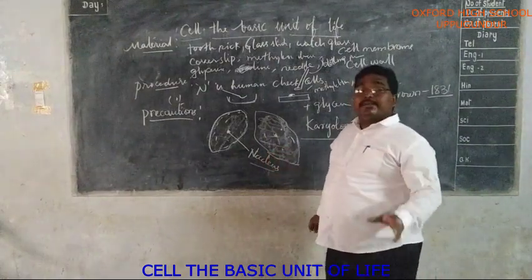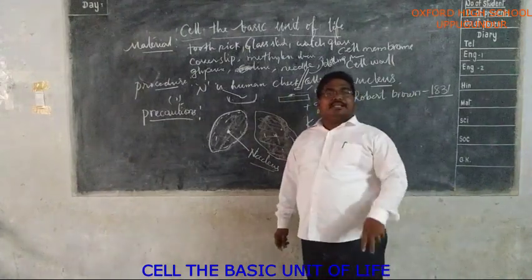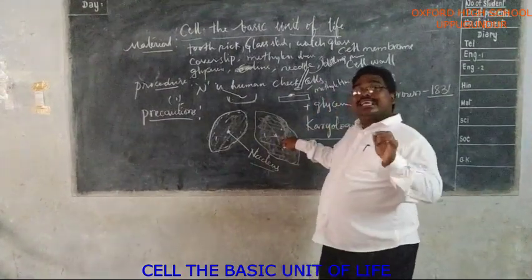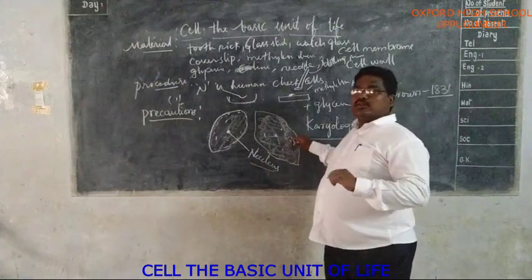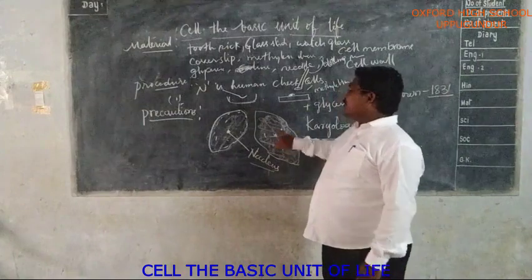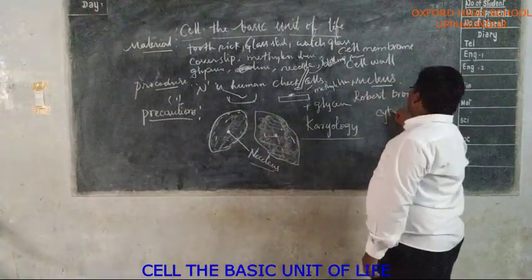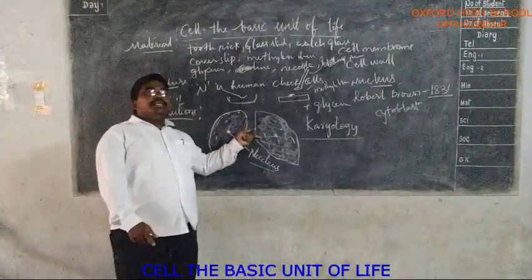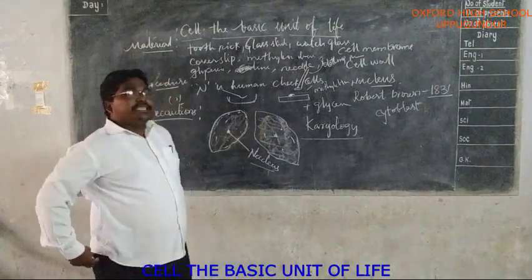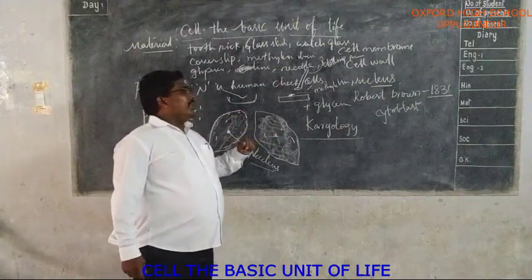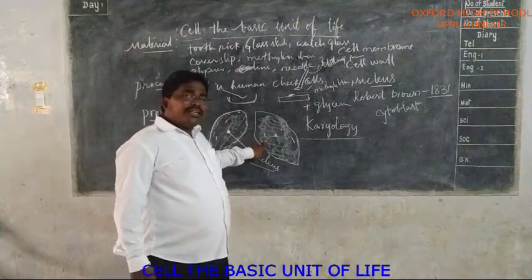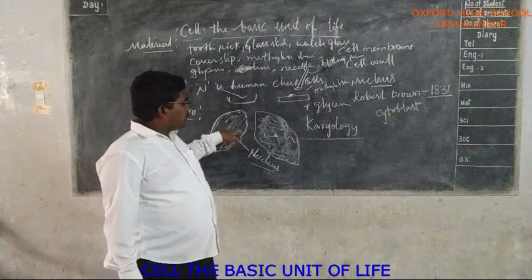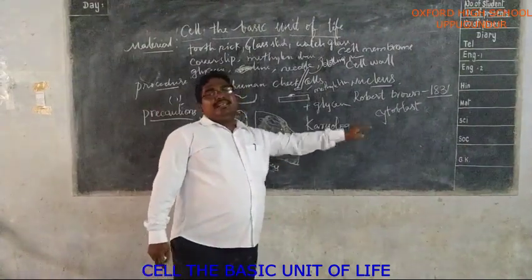Schleiden, one of the proponents of cell theory (proposed by Schleiden and Schwann), thought that new cells are formed from the nucleus, and so he called the nucleus the 'cytoblast.' This was later found to be incorrect, which we will cover in a coming lesson.